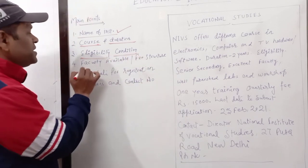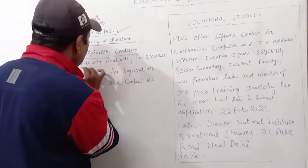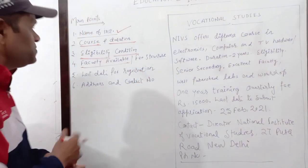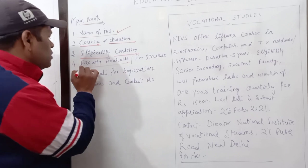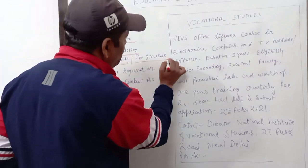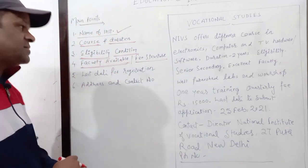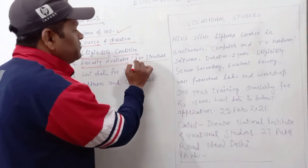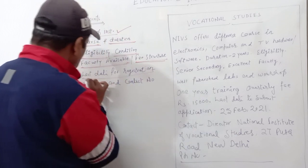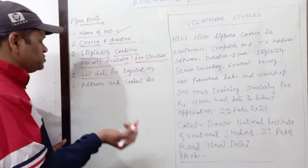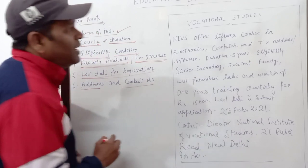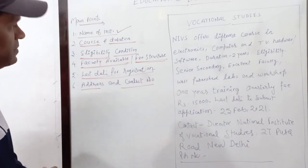Now comes an important point: what faculty is available — the teachers who are going to teach — and that can also be mentioned. An equally important point is the fee structure, which must be mentioned, followed by the last date for registration. And as you know, address and contact number are mandatory.